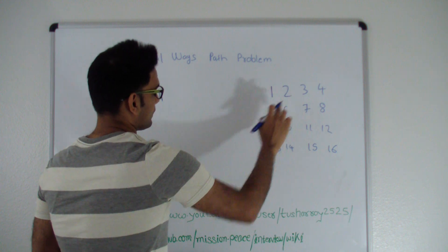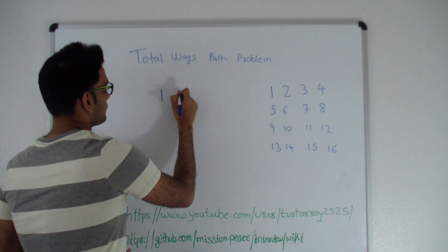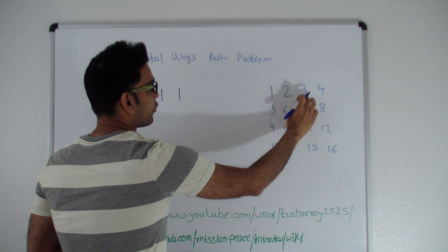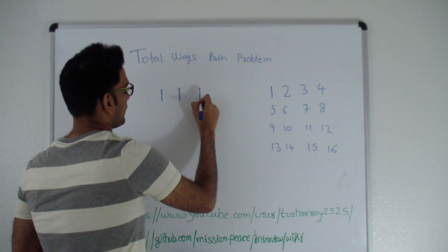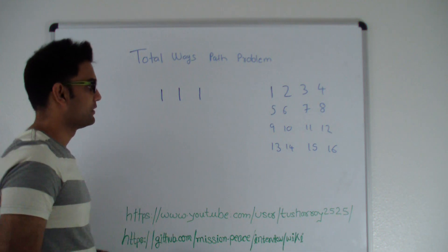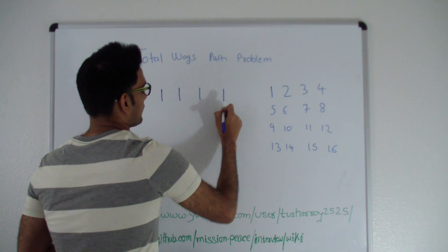When I'm here, there's only one way you can reach here and that's in this direction. So this is also one. There's only one way we can reach here, which is in this direction. So again remember, we can only move right or down. So there's only one way you can reach here. So that's one.